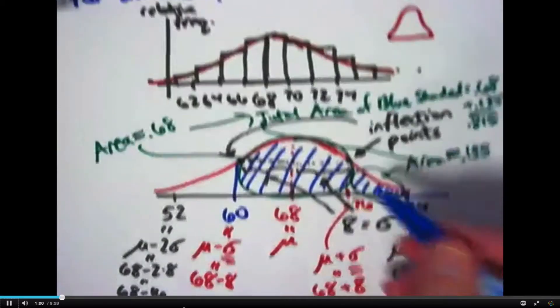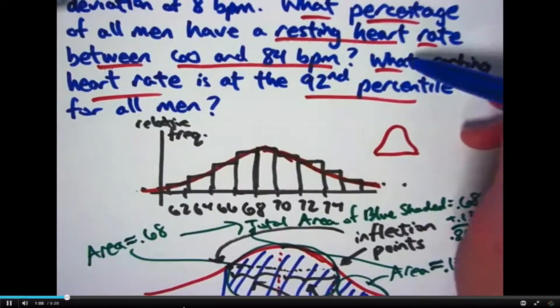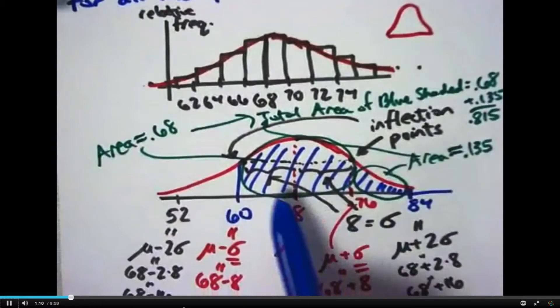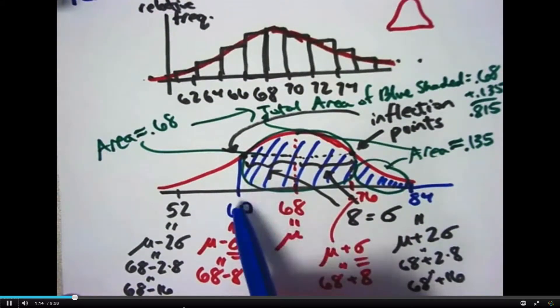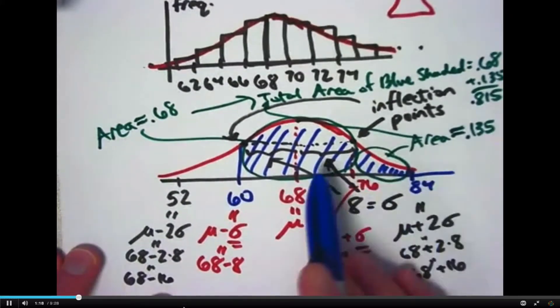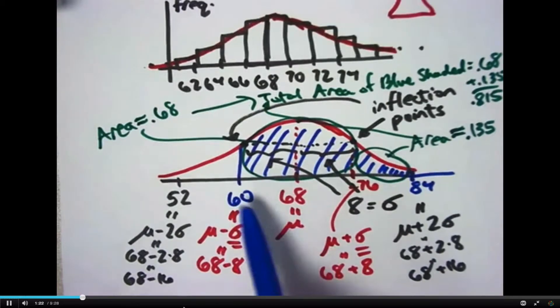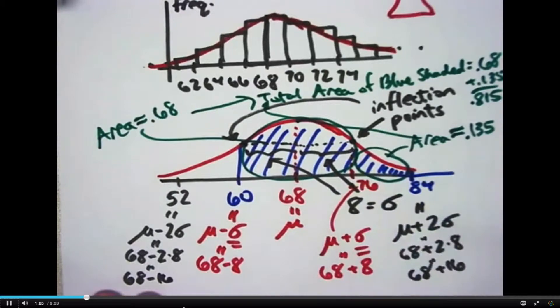And to answer the question up here, what percentage of all men have a resting heart rate between 60 and 84 beats per minute, the key thing we wanted to do was to find the area of the blue shaded region, the area under the curve between 60 and 84. I approximated where 60 and 84 were on this curve pretty well because I know how to interpret the mean and standard deviation on the picture.